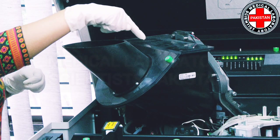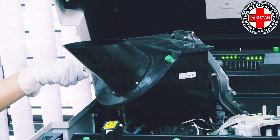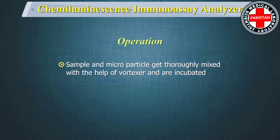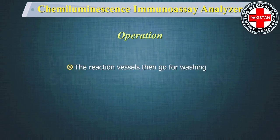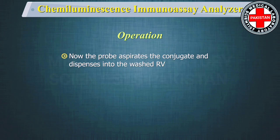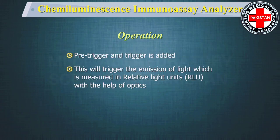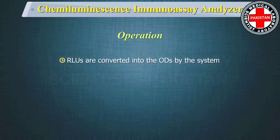The reaction vessel is picked by the picker arm and dropped into the process path. The probe picks the defined amount of sample and dispenses it into the reaction vessel, then aspirates the microparticle solution and dispenses it as well. Sample and microparticles are thoroughly mixed with the vortexer and incubated. The reaction vessels then go for washing, with the probe washed between each step. The conjugate is aspirated and dispensed into the washed reaction vessel, mixed, incubated, and washed again. Pre-trigger and trigger solution are added, triggering light emission measured in relative light units by the optics. RLUs are converted into optical densities by the system and the reading is given for the analyte.